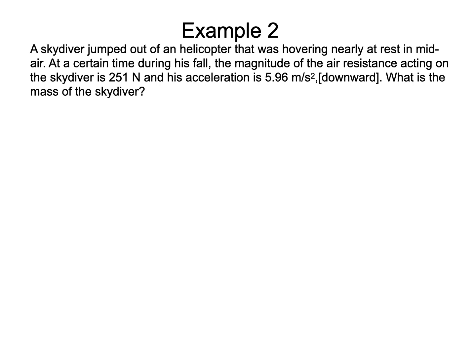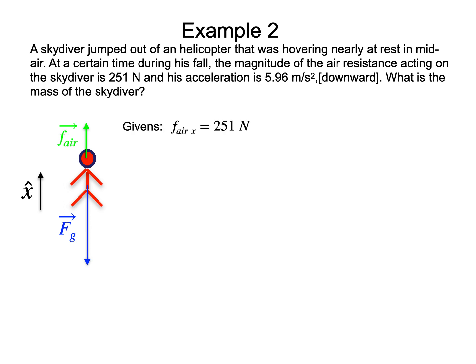Our next example involves a skydiver falling from rest. We want to find his mass from his acceleration and the magnitude of the air friction force acting on him at some point in his fall. So here is our skydiver. The force of gravity is acting on him, and since air friction is not assumed to be negligible, we have to consider it. Air friction acts in the opposite direction to the velocity. So since the skydiver is falling, the air friction is upward. The motion is along the vertical line and all the forces are parallel to that line, so there is no reason for two reference directions. We will use only x-hat, chosen as the upward direction. With this reference direction, the x-component of the air friction force is positive, and the acceleration is negative.